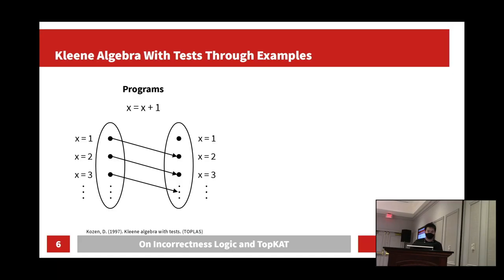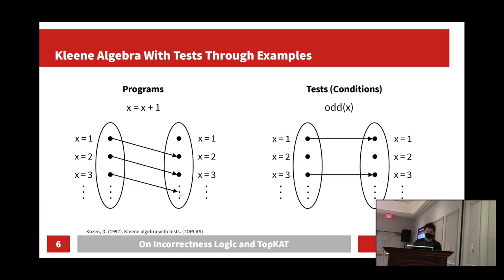For example, here is a relational diagram of x equals x plus 1. Traditionally, in Hoare logic and incorrectness logic, conditions are specified using sets of memories. Kleene algebra with tests uses tests to represent these conditions. For example, here is a condition odd(x).